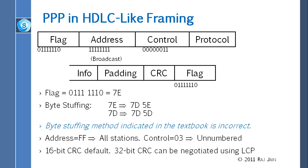PPP is a data link layer protocol. It is reading all the bits, and suddenly finds the flag pattern — 0 followed by six 1s followed by 0 — which marks the byte boundary. Then it reads in bytes. If it finds 7D, it reads the next byte to interpret it. You cannot interpret a single 7D alone. The flag is always 7E. We use hex because 4 bits are easier to explain in hex than decimal.